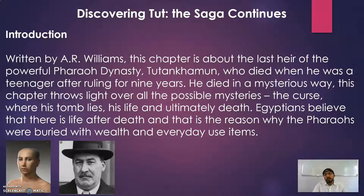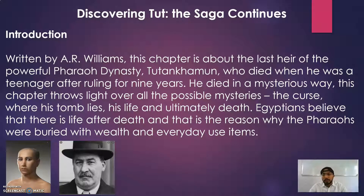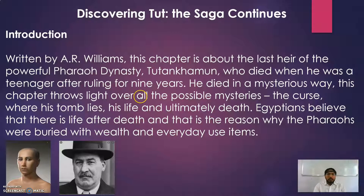First, the introduction. Written by A.R. Williams, this chapter is about the last heir of the powerful pharaoh dynasty — Tutankhamun — who died when he was a teenager after ruling for nine years. Pharaoh means the king in Egypt. Tutankhamun was a teenager when he died, and the mysteries of his death are revealed in this chapter. It throws light on all possible reasons for his death, including the curse, where his tomb lies, his life, and ultimately his death.